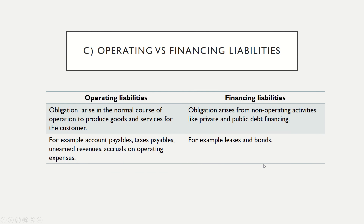For the last question, the difference between operating liabilities and financing liabilities: operating liabilities are obligations that arise in the normal course of operations to produce goods and services for customers — for example, accounts payable, tax payable, unearned revenues, and accruals on operating expenses. Financing liabilities refer to obligations arising from non-operating activities like private and public debt financing — examples include leases and bonds. That's all for the answer, May 2018, Section B, Question 1.